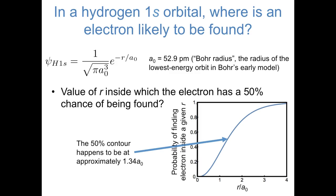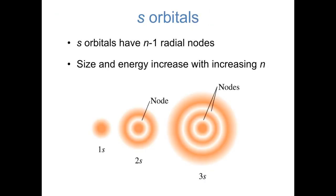We'll take more time in class to look at each of these questions mathematically. So far we've been talking only about the hydrogen 1s orbital. All s orbitals, for which the quantum number L equals 0, are spherically symmetric. In general, s orbitals have n minus 1 radial nodes: the 1s orbital has none, the 2s has one, the 3s has two, and so on. Radial nodes are spherical shells on which there's no chance of finding the electron. The size and energy of s orbitals increase as n increases.